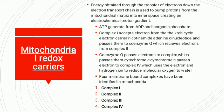Energy obtained through the transfer of electrons down the electron transfer chain is used to pump protons from the mitochondrial matrix into the intermembrane space, creating an electrochemical proton gradient. ATP is generated from ADP and inorganic phosphate. Complex 1 accepts electrons from the Krebs cycle electron carrier nicotinamide adenine dinucleotide (NADH) and passes them to coenzyme Q, which also receives electrons from Complex 2.